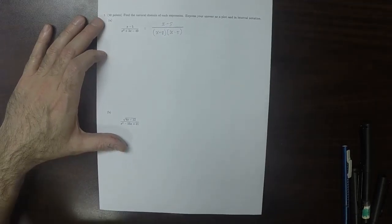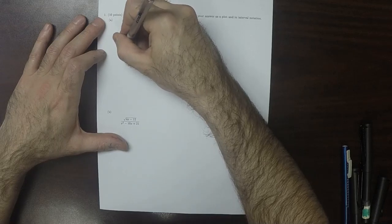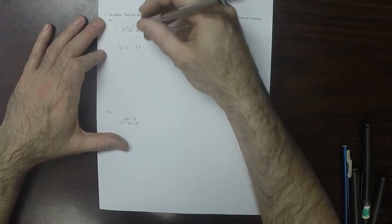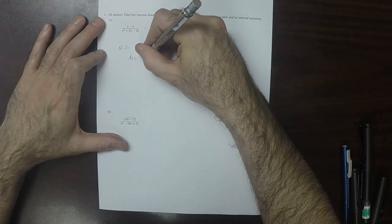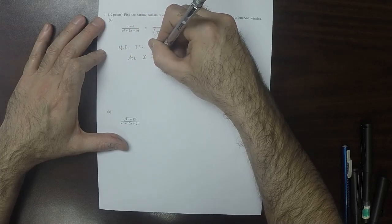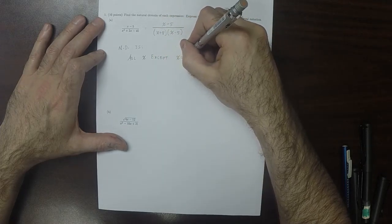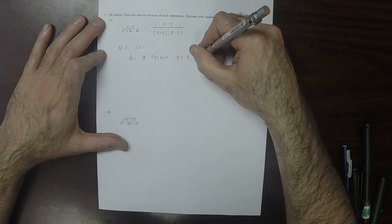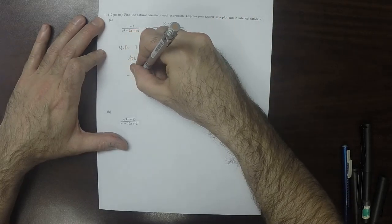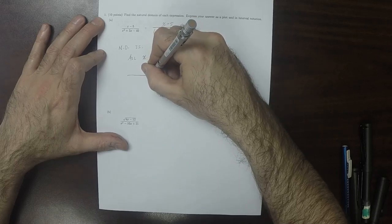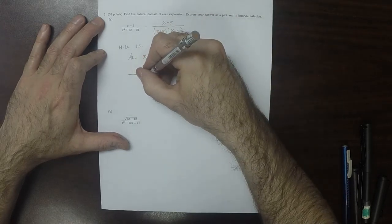So now, this means that the natural domain is all x except x is negative 8 or x is 5, which, when plotted, looks like this.